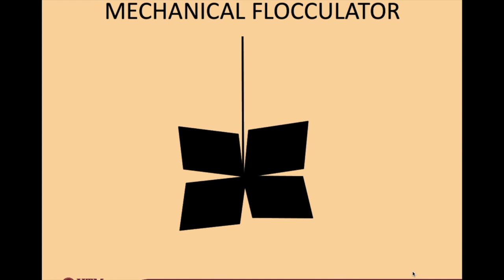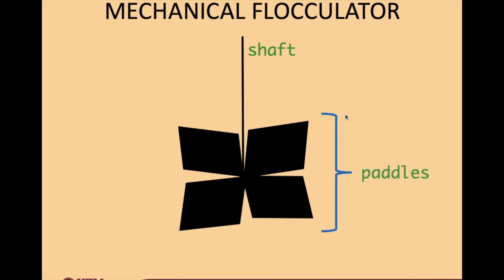I would like to introduce you to the components of the mechanical flocculator. You can see several parts. The first thing I would like to introduce is this long thing, which is called a shaft. A shaft.